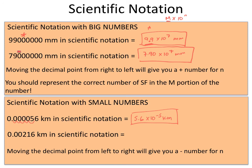In the last example, we move the decimal three spaces to the right so we have only one digit in front of the decimal. That gives us 2.16 times 10 to the negative third kilometers. Just make sure the single digit in front of the decimal is part of the m portion of the scientific notation, that the number of significant figures you start with ends up in the m portion, and remember that your exponent is dictated by the direction you move your decimal point.